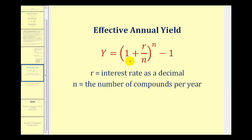Here's the formula used to determine the effective annual rate by hand, where Y is the effective annual rate, R is the interest rate as a decimal, and N is the number of compounds per year.